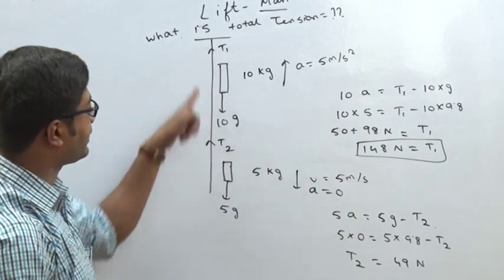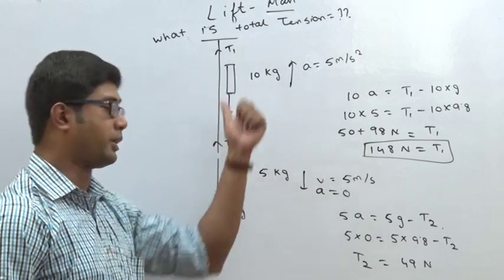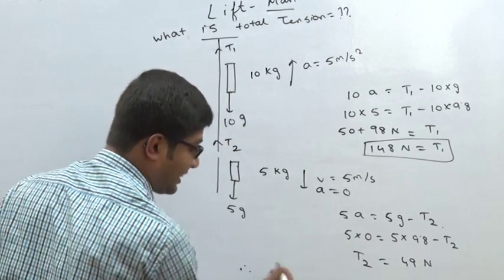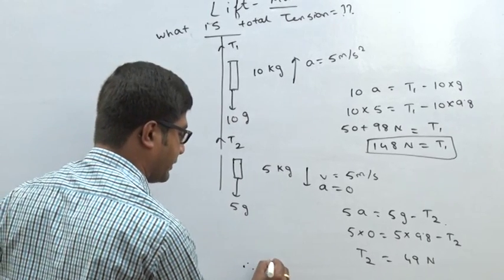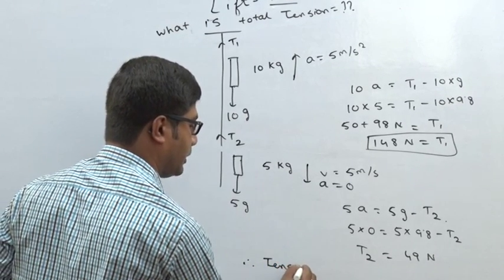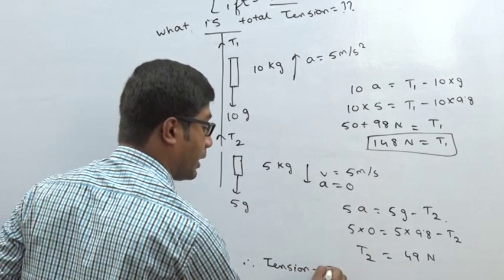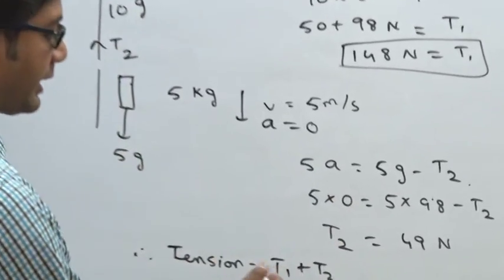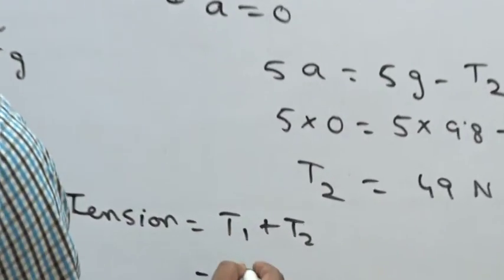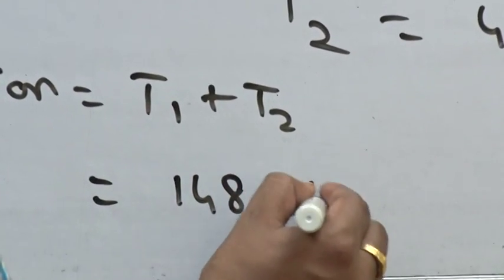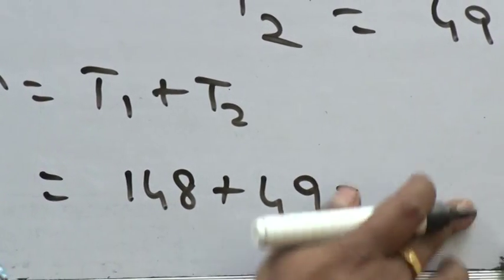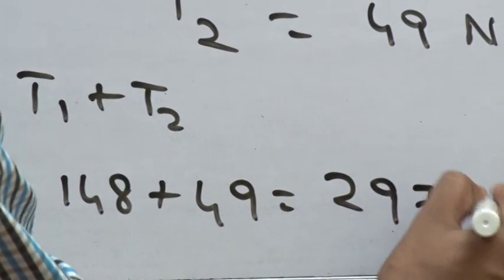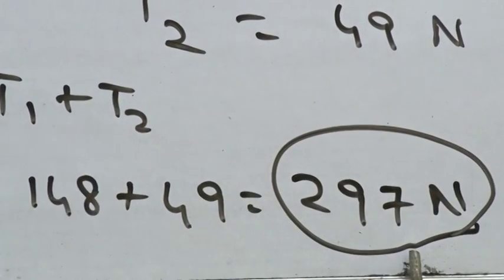Now T1 and T2 are both directed upward along the same direction. So the total resultant tension is T1 plus T2 = 148 plus 49 = 297 N. That is the final answer.